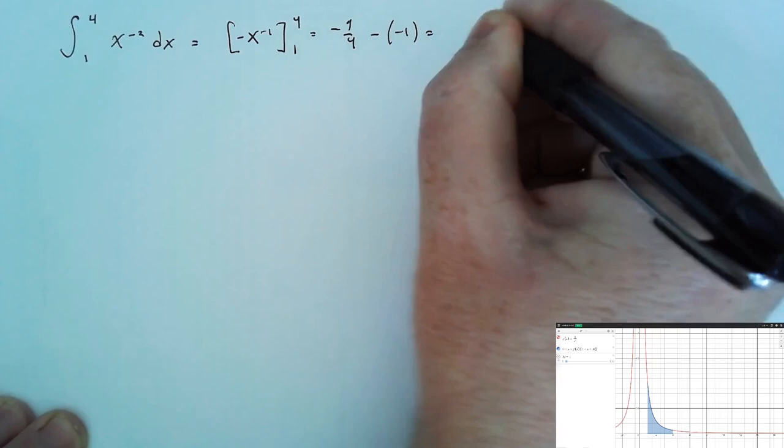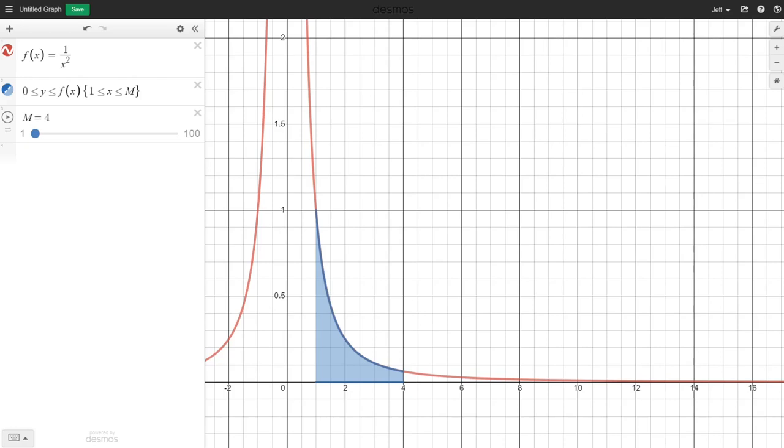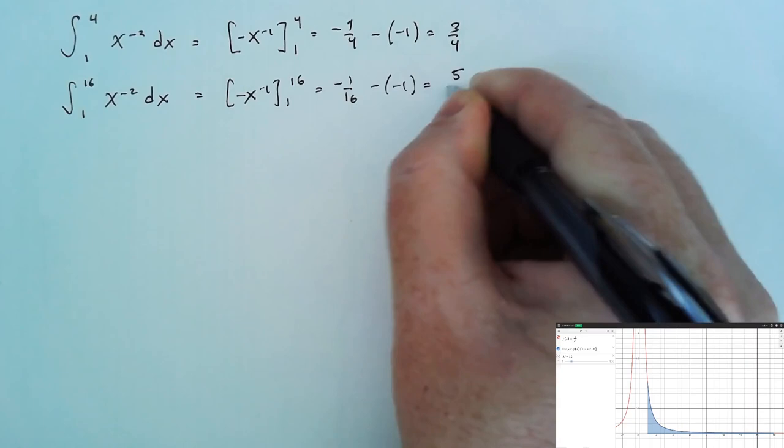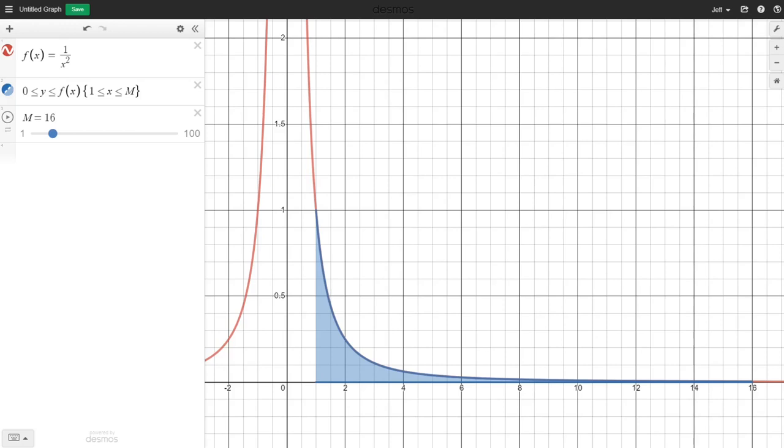We could also find the area under this curve and above the x-axis between x equals 1 and, say, x equals 16. But could we find the area under this curve between 1 and infinity if we let the upper endpoint of integration increase without bound?